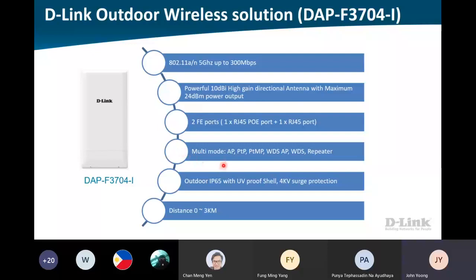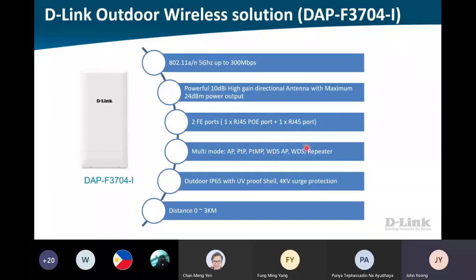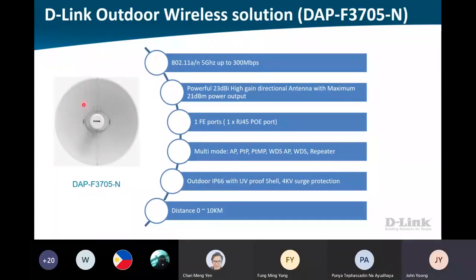All modes are supported. The dish version is also wireless N up to 300Mbps but with much higher DBI. Only one FE PoE port, supports all modes, IP66, up to 10 kilometers. Next will be our AC solution - only 5GHz. The first one is up to 867Mbps, 15 DBI, with 2GE ports, IP66, up to 3 kilometers.